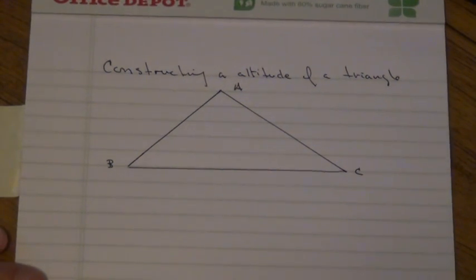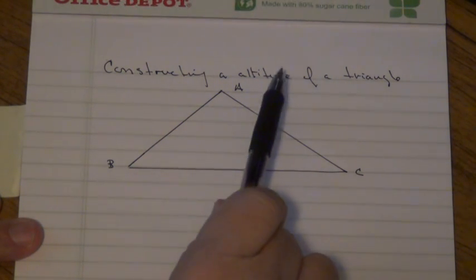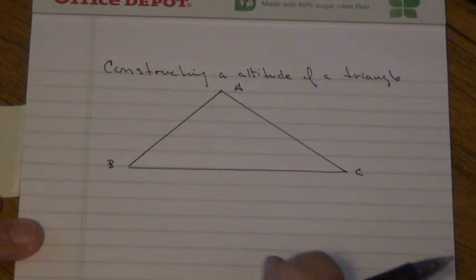Alright, here we're given a triangle ABC, and we want to construct the altitude of this triangle. Like medians, there are three medians to a triangle; there's also three altitudes for any given triangle.